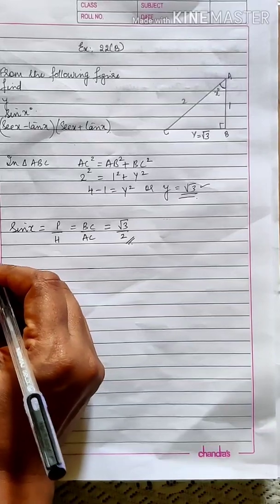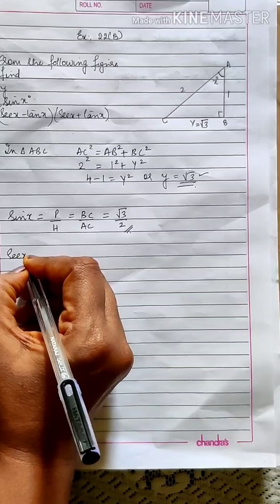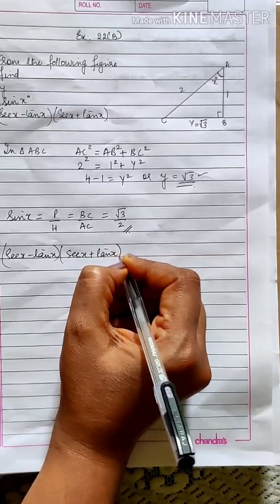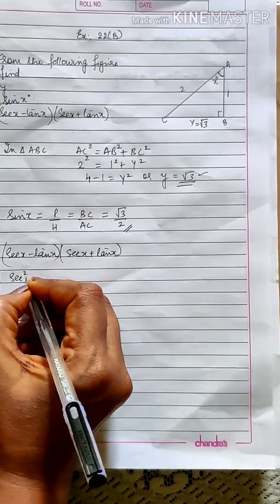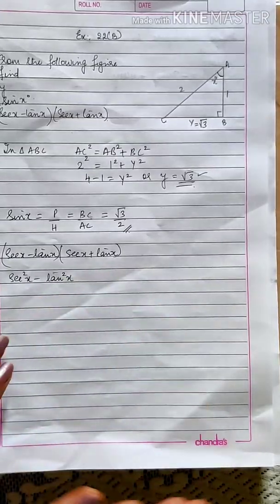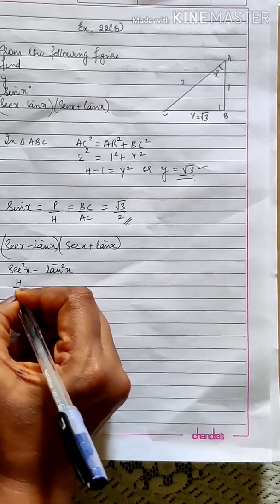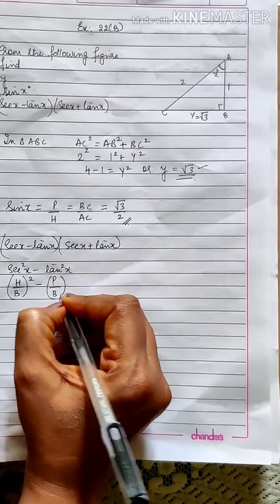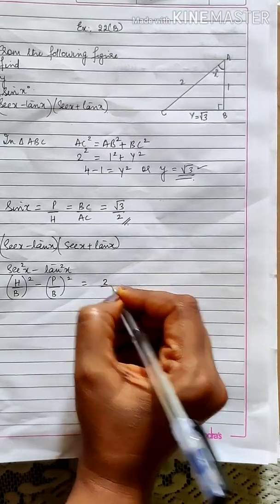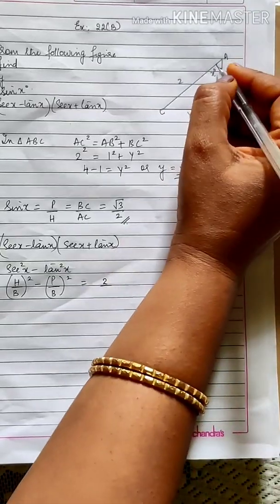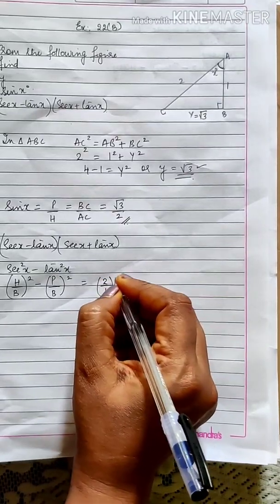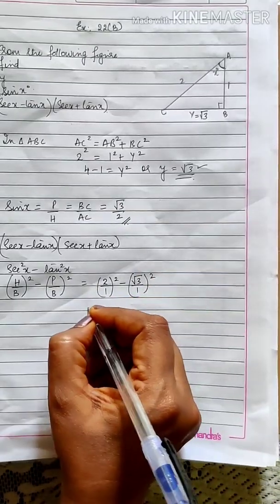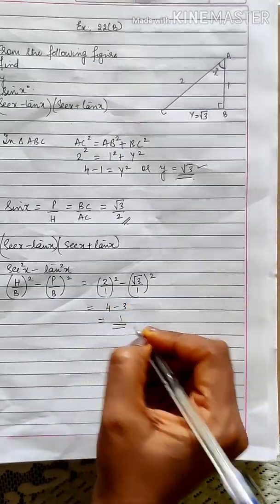Moving to the third expression: (secant x minus tan x)(secant x plus tan x). This is of the form (A minus B)(A plus B), which gives secant square x minus tan square x. The ratio for secant x is hypotenuse by base, squared, minus tan squared which is perpendicular by base, squared. The hypotenuse is 2, the base for angle x is 1. So (2/1)² minus (root 3 / 1)² gives 4 minus 3, which is equal to 1.